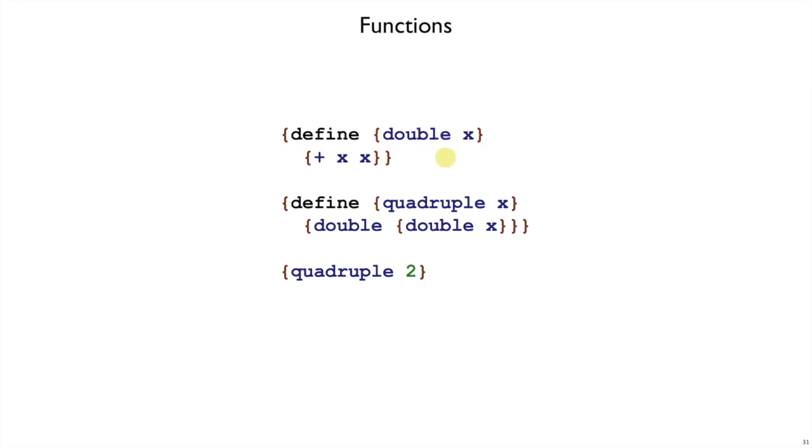Just to keep things simpler, all of our functions will take only one argument. So here I'm defining double and quadruple where quadruple calls the double function twice to quadruple the number. And so if I quadruple two then I expect to get eight back as the result.